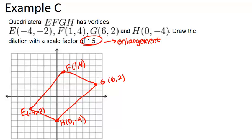In order to create the image, what we can do is multiply each of the four points by 1.5 in both the x-coordinate and the y-coordinate. So for example, if we want to get E prime,